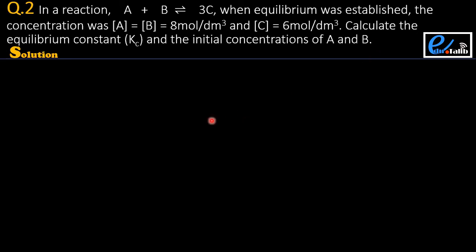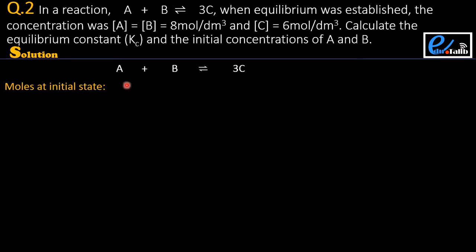To start solving this question, first we copy the equation: A plus B giving 3C. We write the moles at initial state. Since the number of moles at initial state is unknown for both reactants, we assume variables A and B.